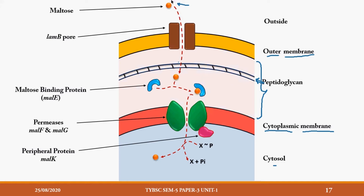Outside the cell we have maltose waiting. We are studying how exactly maltose is taken inside. Maltose is a sugar — a disaccharide sugar — and it is an example of the substrates transported by the shock-sensitive transport system, along with amino acids. Maltose is lying outside and it has to cross the outer membrane through a pore shown here.